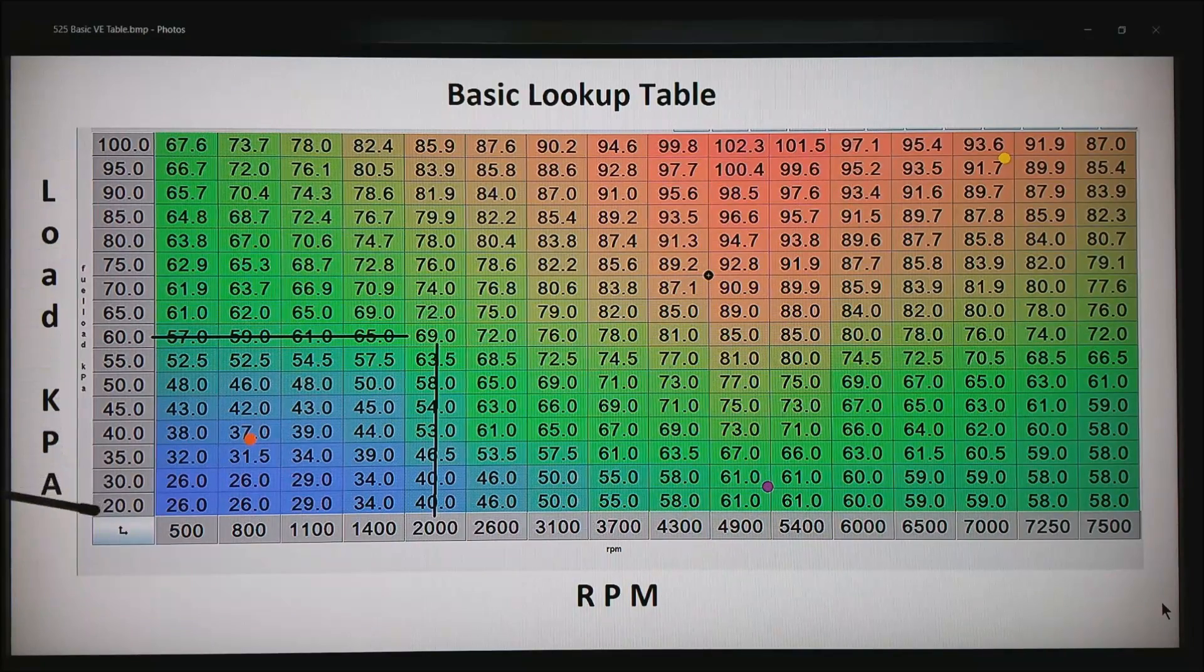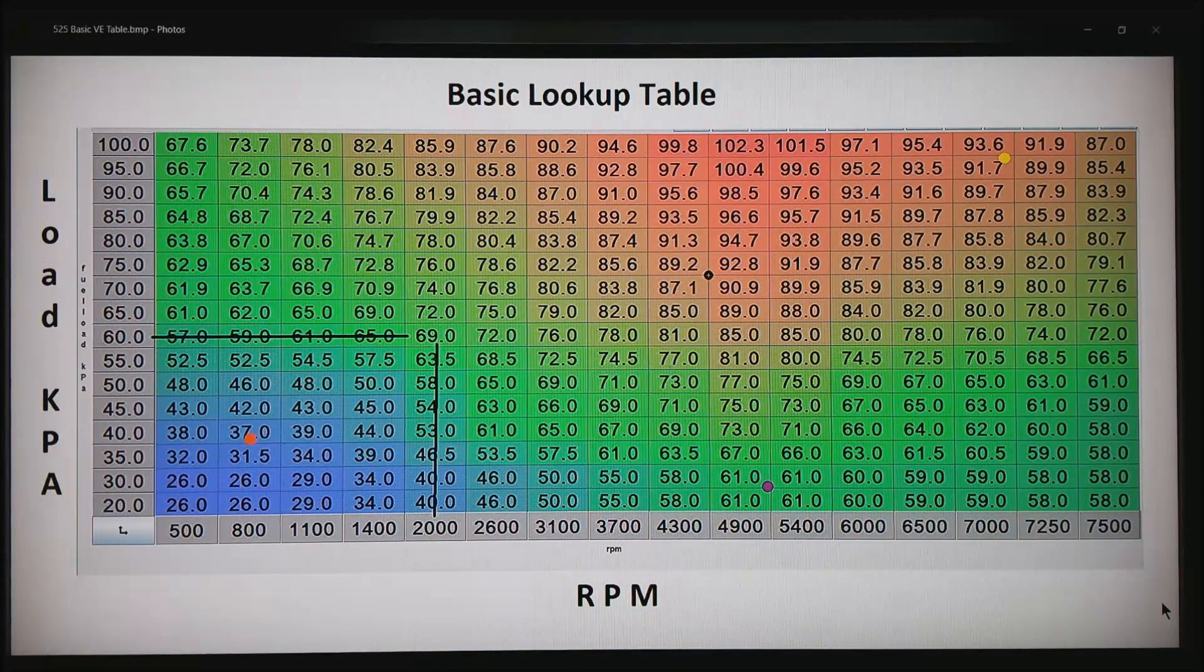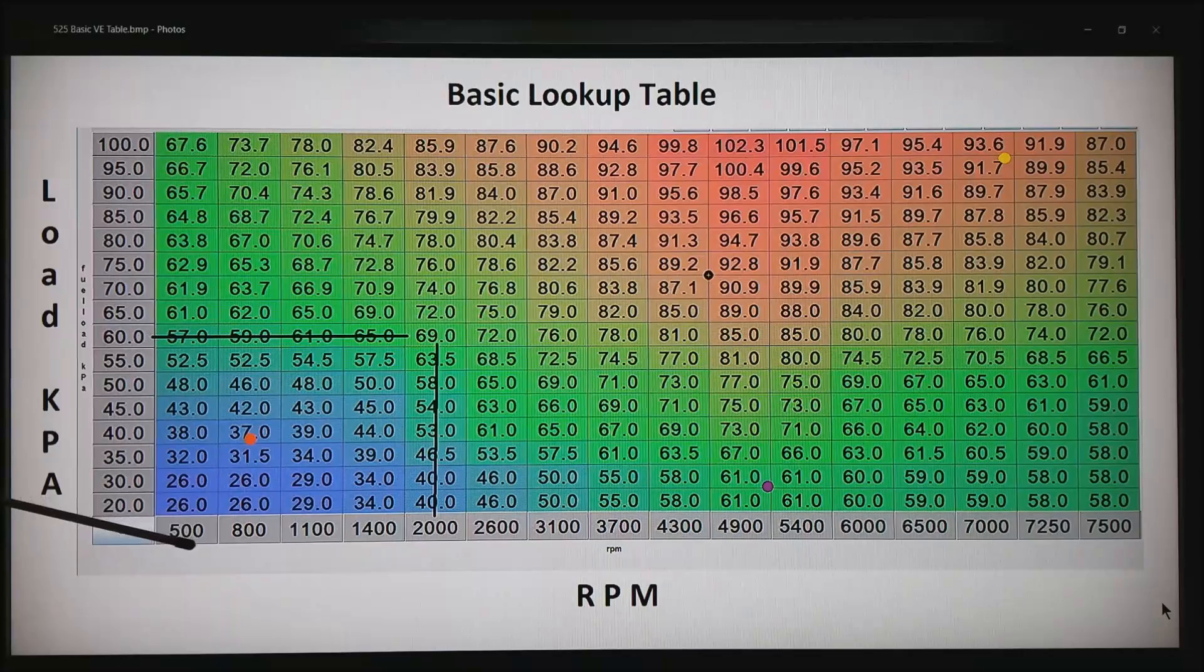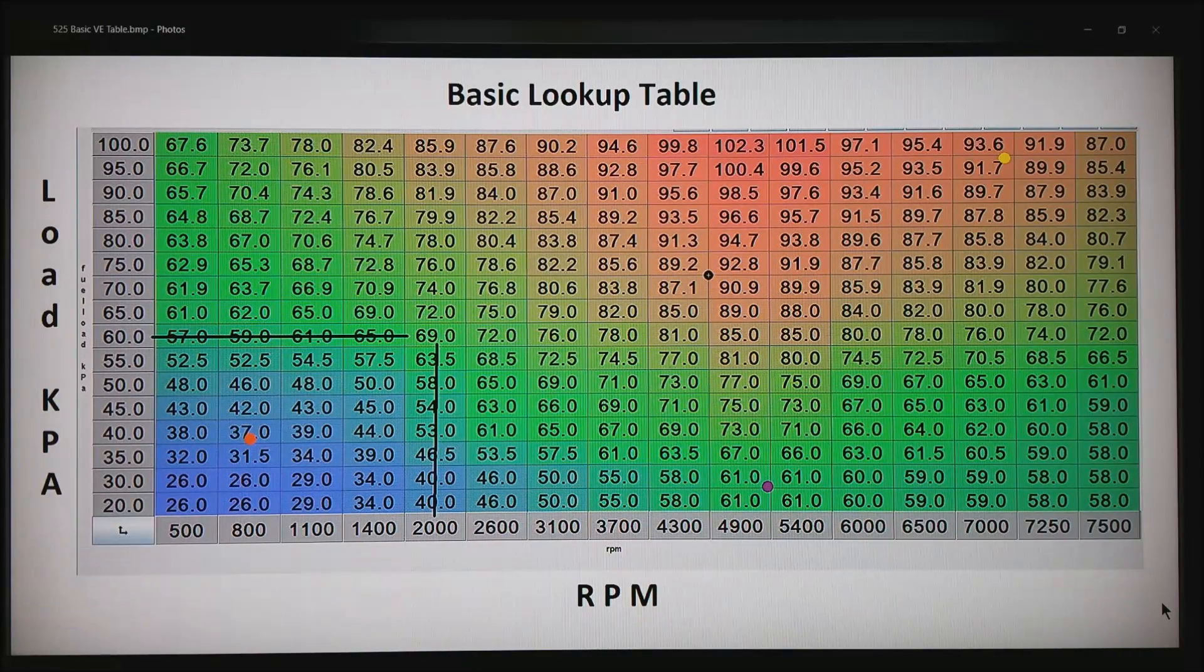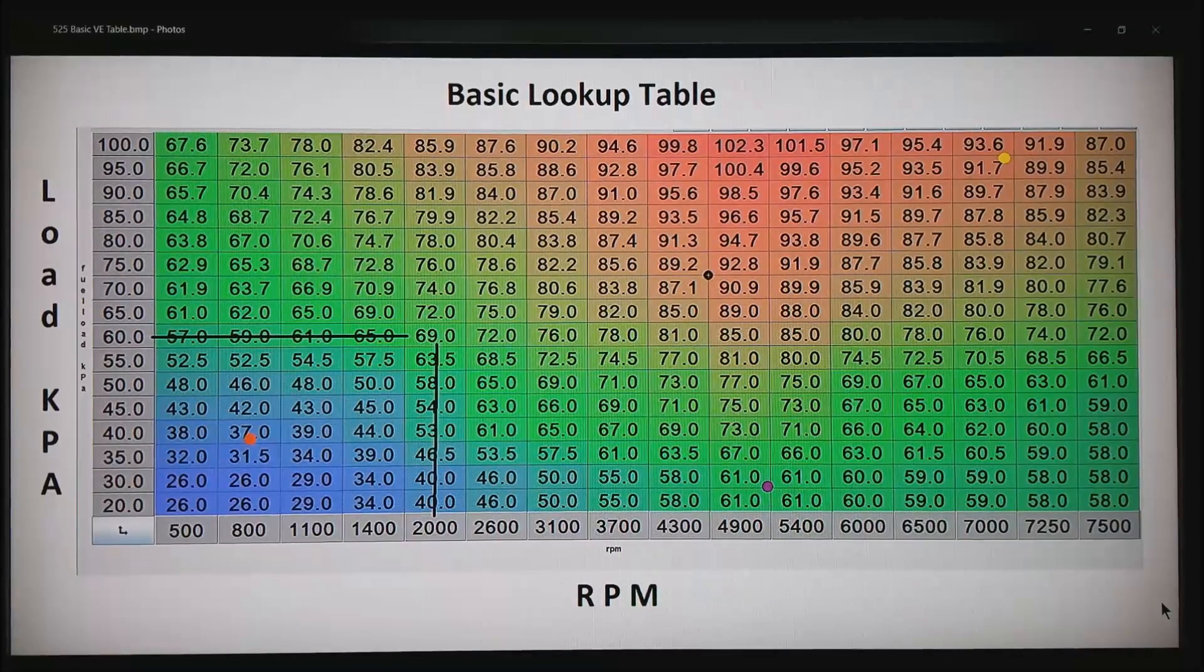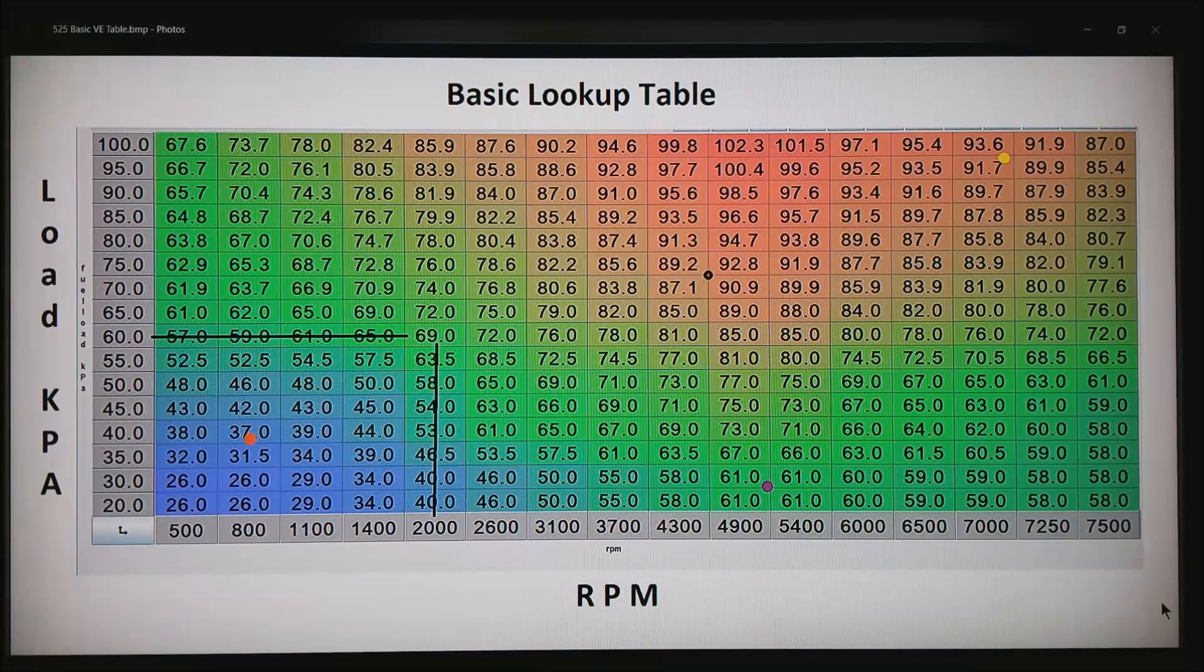Along the bottom we run RPM from somewhat under idle. This is 500 rpm up through 7500 rpm in the bottom right corner.